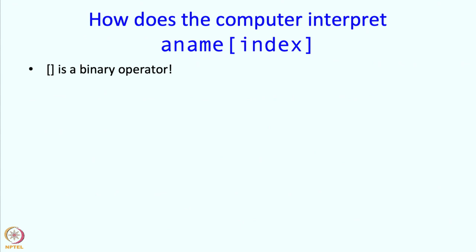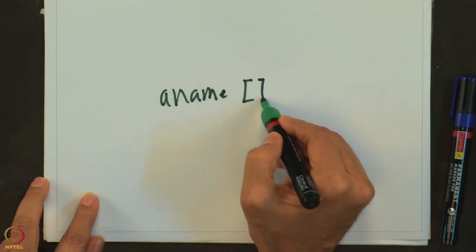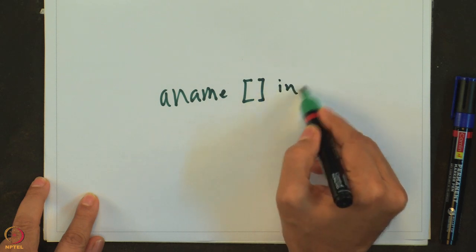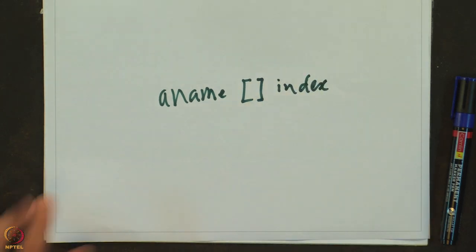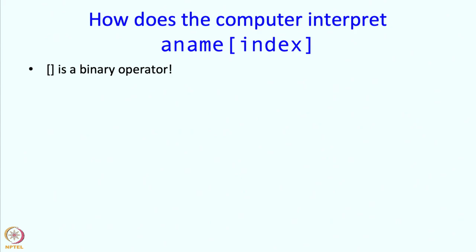So we could have written this expression as aname square bracket index. This may make it look more like an operator expression. But because we are familiar with putting things inside brackets, we choose to write it as aname open bracket index closed bracket. But really the interpretation of C++ is sort of like this.